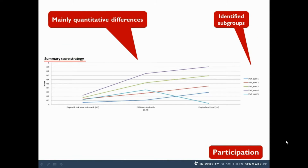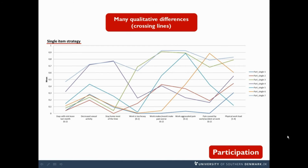This is an example of a profile plot in the participation domain using the summary score strategy. We mainly see quantitative differences where four or five subgroups only differ by means of a continuum. In contrast, this plot of the same domain but using a single item strategy shows more qualitative differences, as seen by lines crossing in the plot, which indicates specific characteristics that describe the differences between the subgroups. Similar plots were made for both strategies in the four domains.